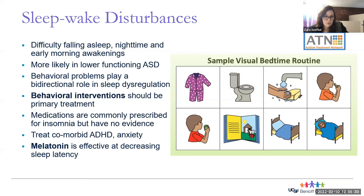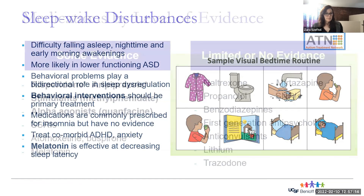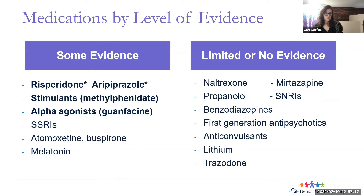Sleep and wake issues are more common in lower functioning patients with autism. Behavior is a bidirectional phenomenon that plays a role in sleep. Behavioral interventions are really the primary treatment. There are many medications used for insomnia that aren't evidence-based. We recommend treating comorbid ADHD and anxiety, which can contribute to arousals and insomnia. Melatonin is known to be effective for decreasing sleep latency. Risperdal and Abilify have the highest degrees of evidence with FDA approval, while many other medications have limited or no evidence.